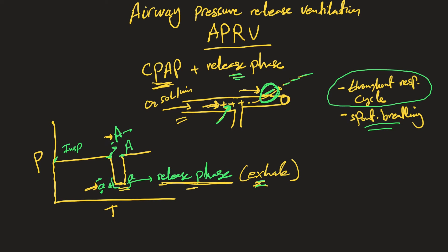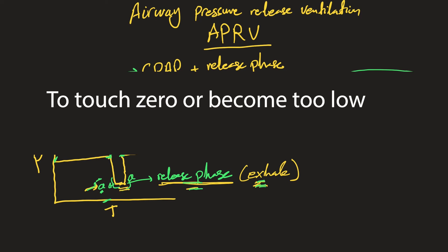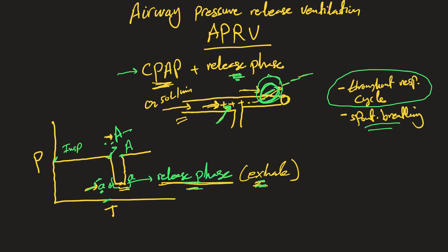To wrap up: airway pressure release ventilation is CPAP plus a release phase. The release phase is when the valve is open and pressure drops from capital A to small A, creating a pressure gradient that allows air to be exhaled. The longer the release phase, the more exhalation occurs. We must be careful not to let small A drop to zero, because that would cause alveolar collapse, de-recruitment, and hypoxia — which is not the purpose of APRV.